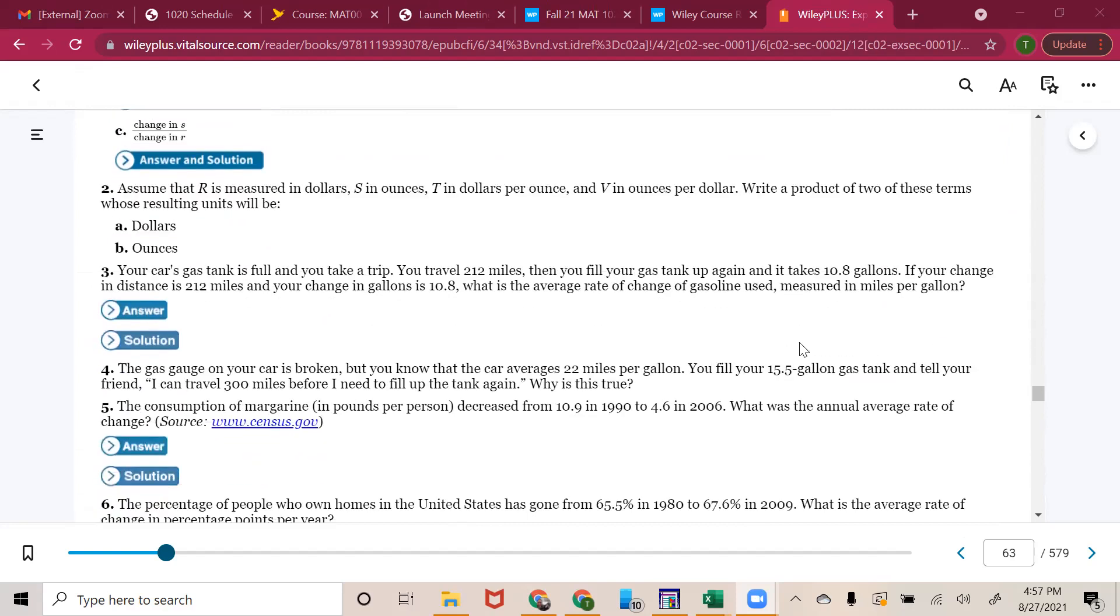So number two, assume that R is measured in dollars, S in ounces, T in dollars per ounce, and V in ounces per dollar. Write a product to two of these terms whose resulting units will be part A dollars and part B ounces. So what they're asking us to do is they're asking us to figure out which one of these two things can I multiply together that I'm going to have units cancel.